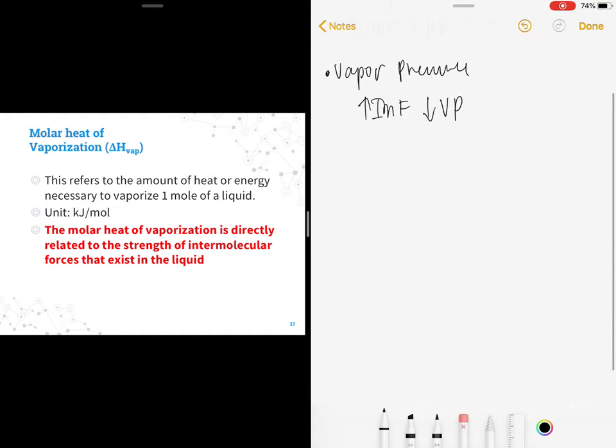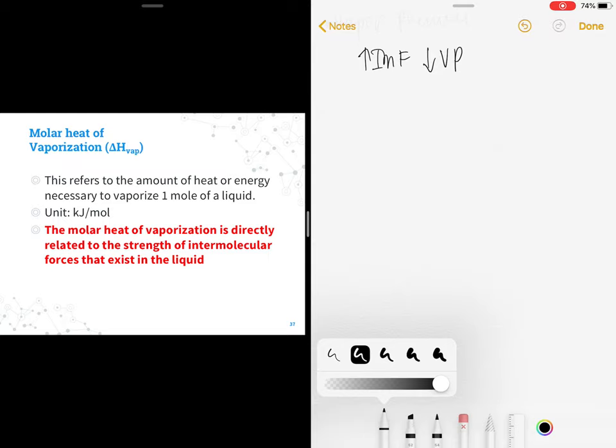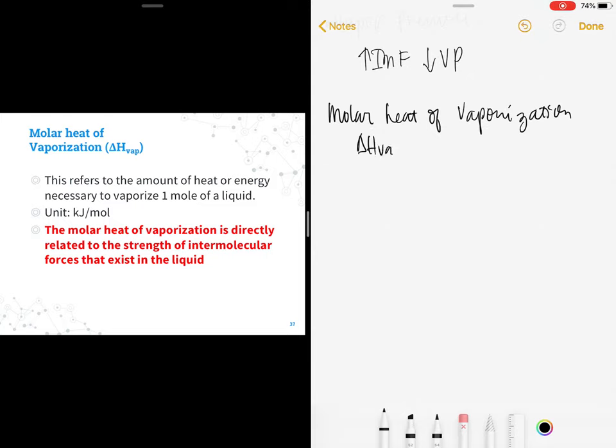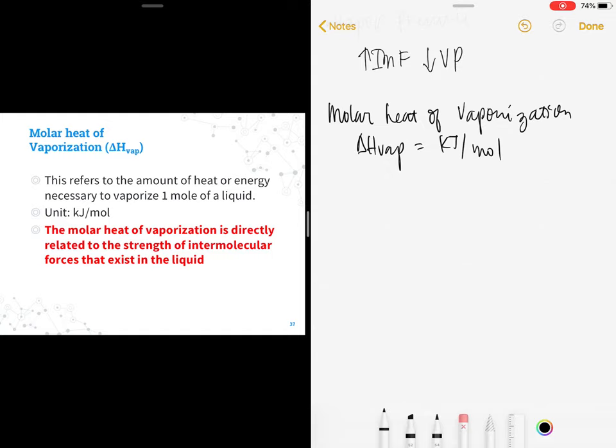Now let's go to the molar heat of vaporization. It is symbolized by delta H vape. This refers to the amount of heat or energy necessary to vaporize exactly one mole of a liquid. Its unit is kilojoule per mole. The molar heat of vaporization is directly related to the strength of intermolecular forces that exist in the liquid. The stronger the IMF, the higher the value of the molar heat of vaporization.